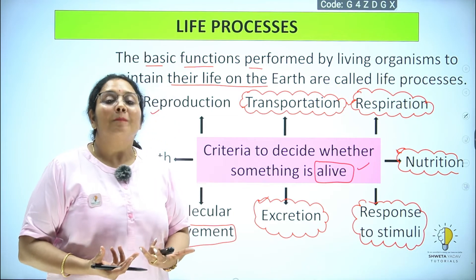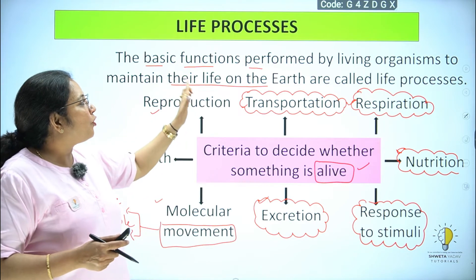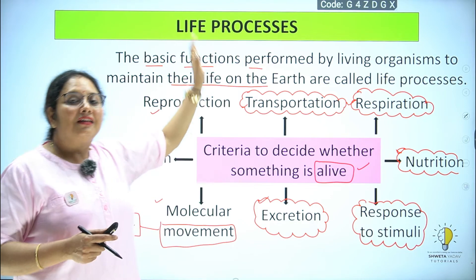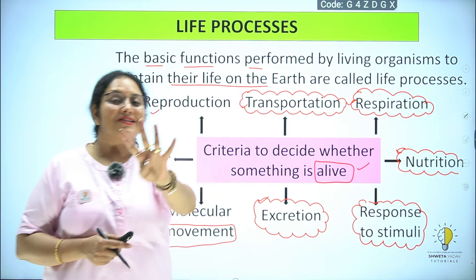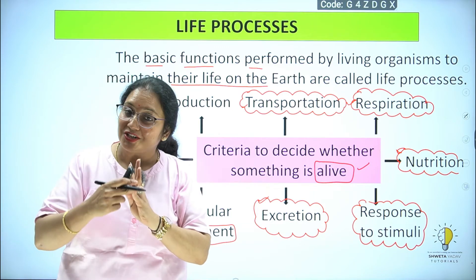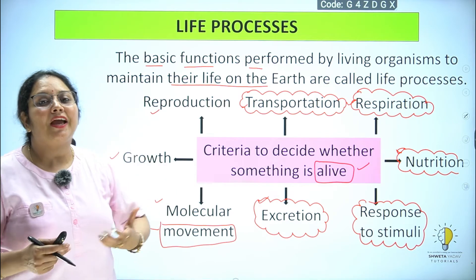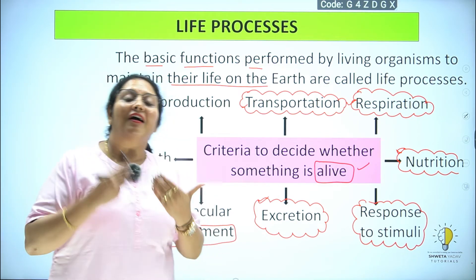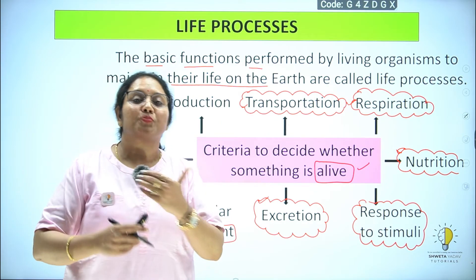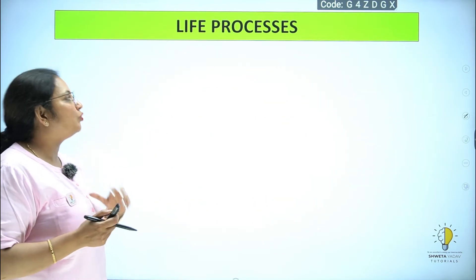तो हमने क्या देखा कि जो life processes हैं — the basic function performed by living organism to maintain life on earth is called life processes। There are four essential life processes: nutrition, respiration, transportation, excretion — ये चार गाड़ी के पहिये हैं। इसके अलावा कुछ और criteria भी हैं जो एक organism को जिन्दा करार देते हैं: growth, molecular movement, response to stimuli, reproduce करना — ये सारे criteria में count होते हैं।